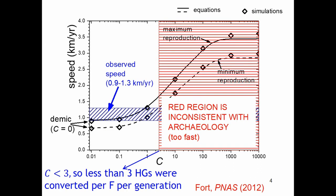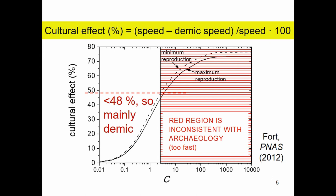The observed range of 0.9 to 1.3 km per year is shown on this plot. The red region — where spread rates are too fast — is inconsistent with the archaeological data, requiring c to be less than 3. That means fewer than 3 hunter-gatherers were converted per farmer per generation. In this valid region, the cultural effect is less than 48 percent, meaning demographic diffusion was more important than cultural transmission. Archaeology therefore implies that the Neolithic in Europe was mainly driven by demic diffusion.